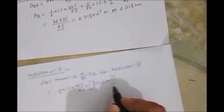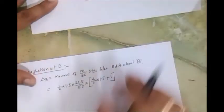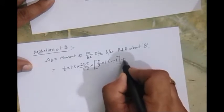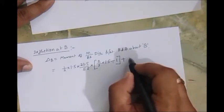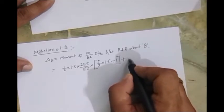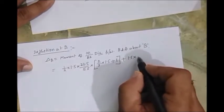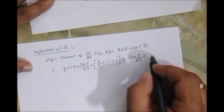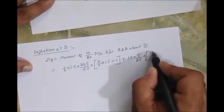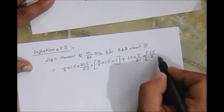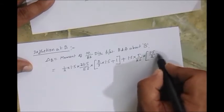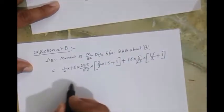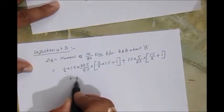Let's use the same procedure for rest, so it is the answer. Then plus second region, 1.5 into 5 by EI into, it's rectangular so CG lies L by 2 or B by 2.